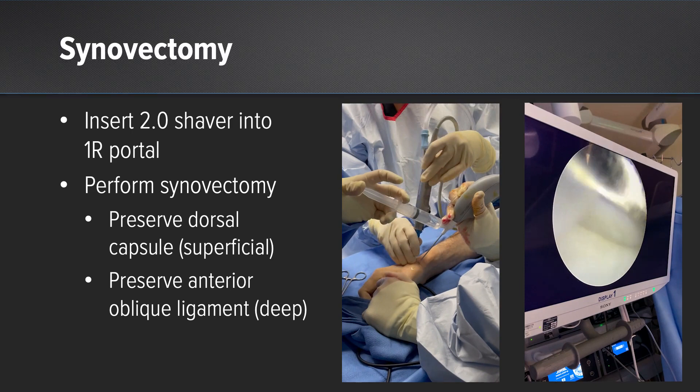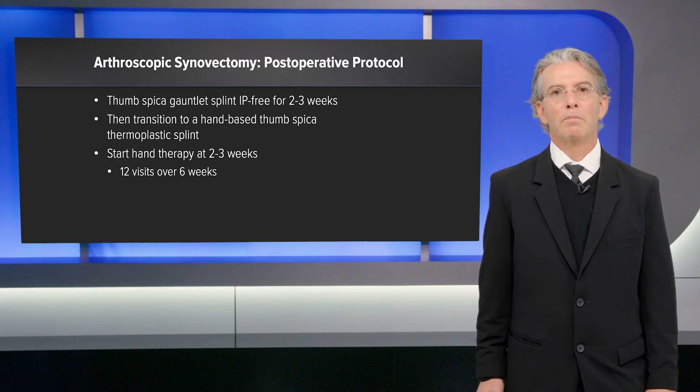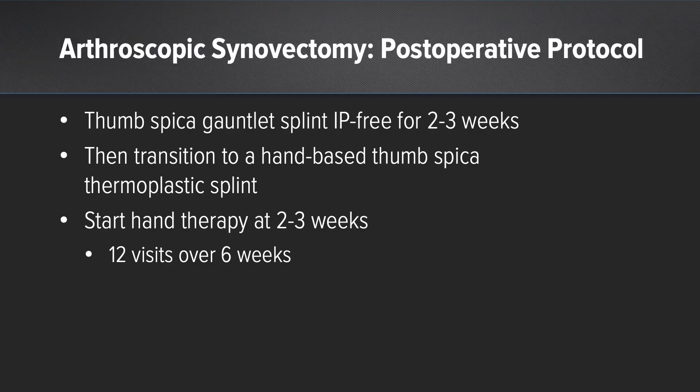After the synovectomy is complete, the fluid is removed with a cannula. Postoperatively, the patient is placed in a thumb spica splint for about three weeks, and then transitioned to a removable hand-based splint for another three weeks. They can go for hand therapy for two to three weeks, and by six weeks resume normal activities.